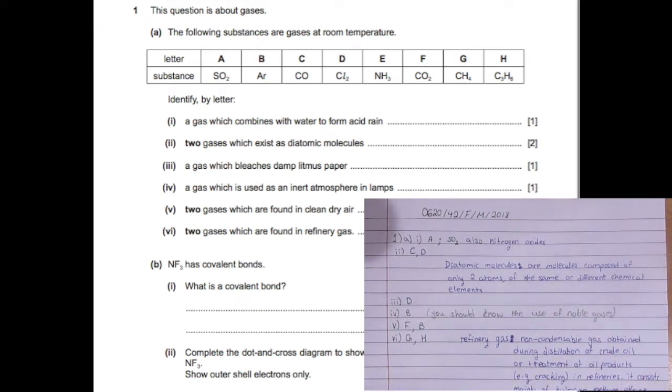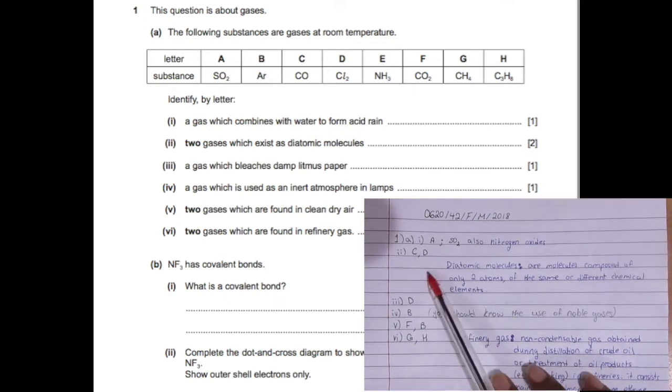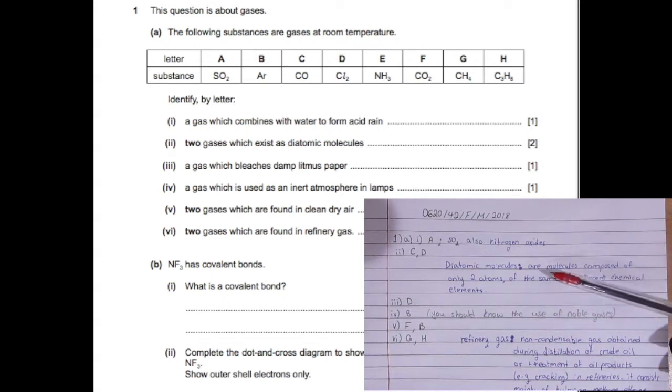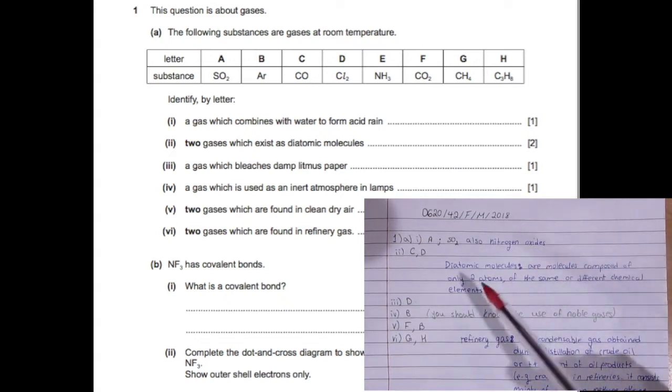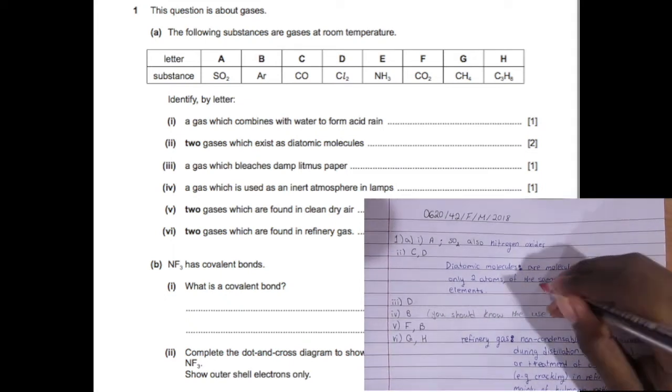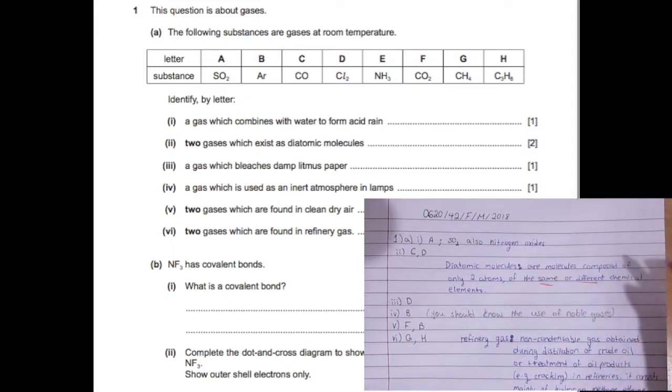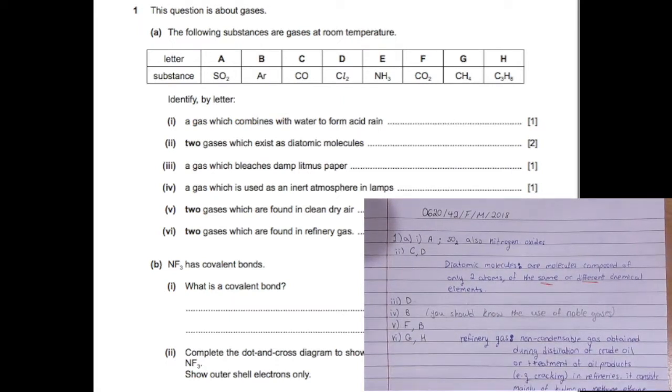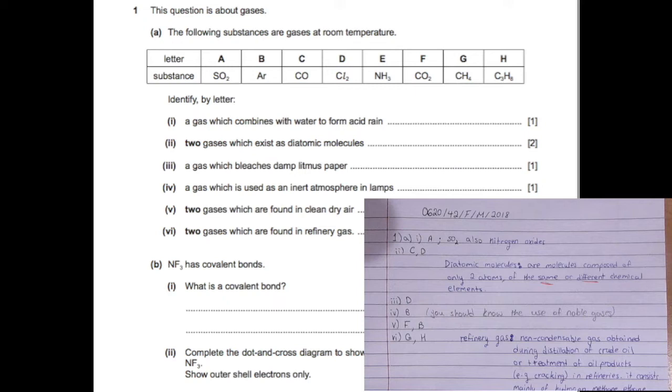A gas which combines with water to form acid rain, that is sulfur dioxide and it forms sulfuric acid. Also nitrogen oxides form acid rain even though it's not mentioned here. Now two gases which exist as diatomic molecules, you automatically look at chlorine, but also carbon monoxide, because diatomic molecules are composed of two atoms of the same or different chemical elements, so carbon monoxide is a diatomic molecule.